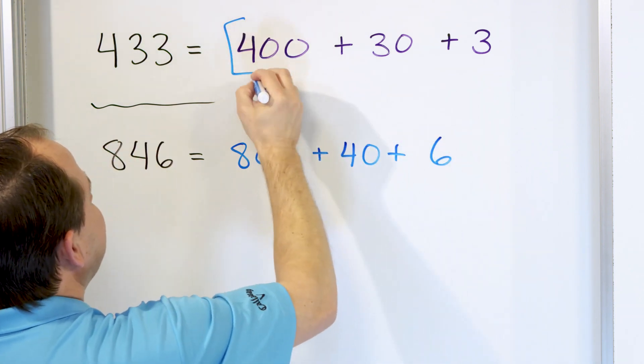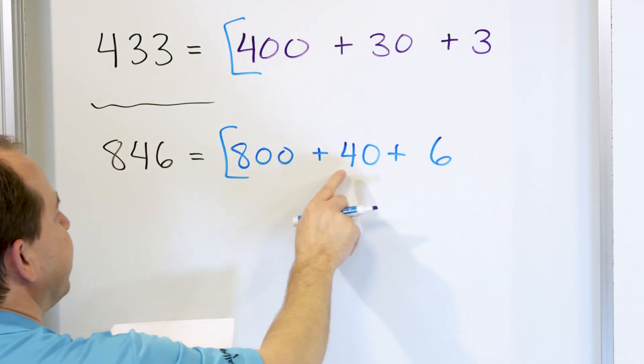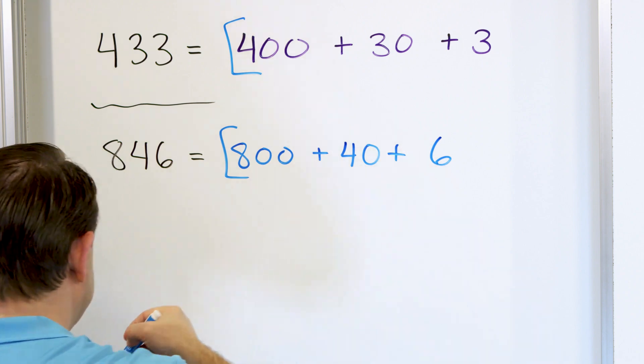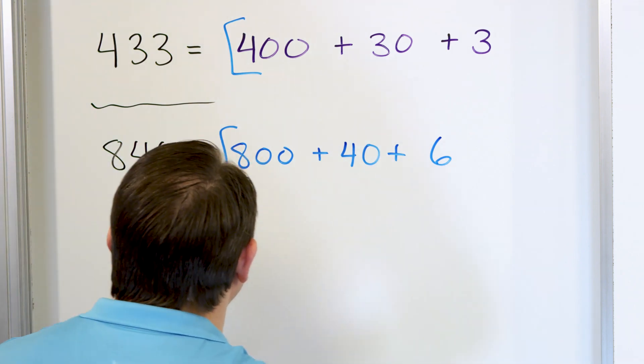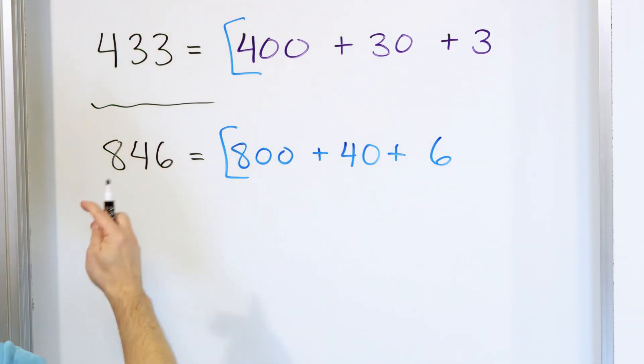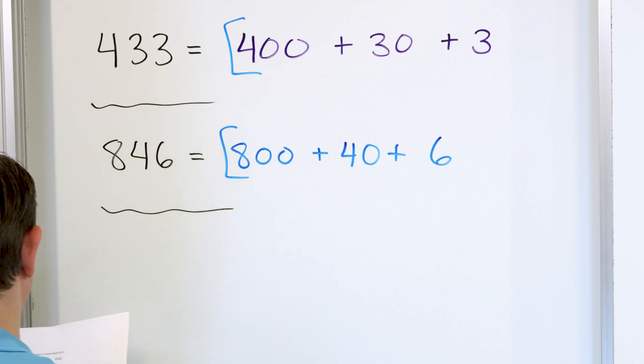So here is the answer to this problem: 800 plus 40 plus 6. All of these problems are going to be very similar, and none of them are going to be very difficult.